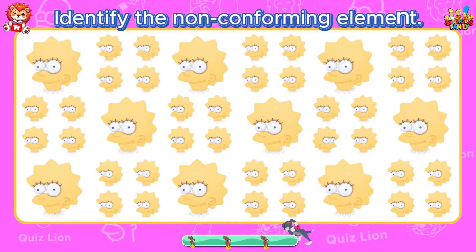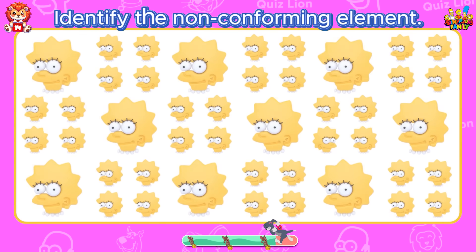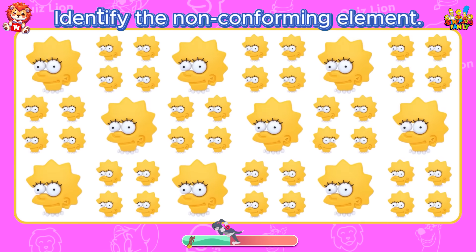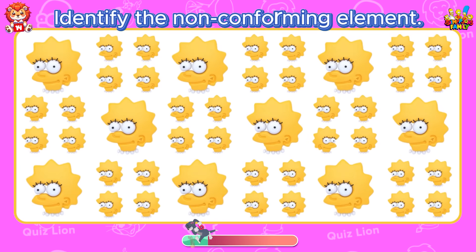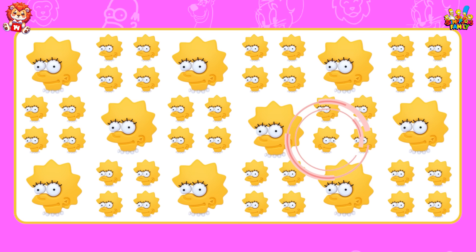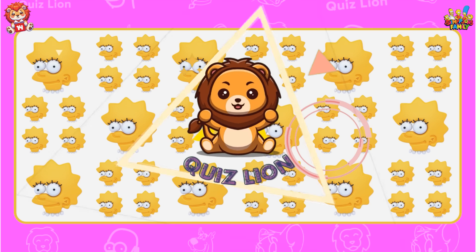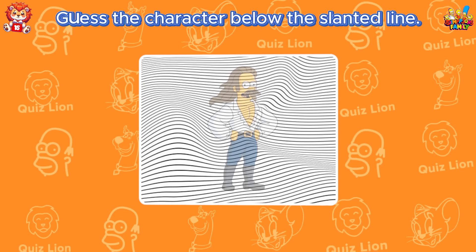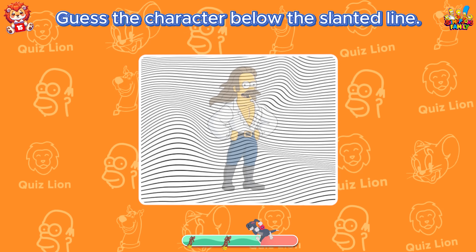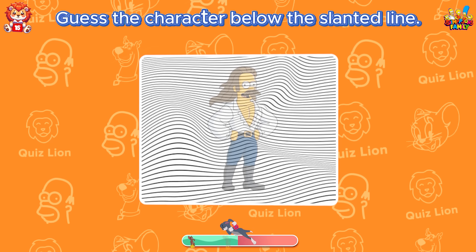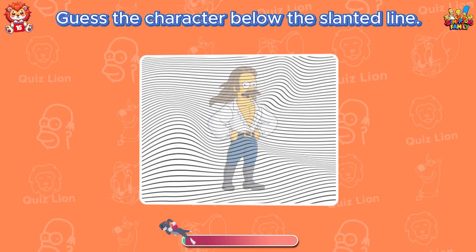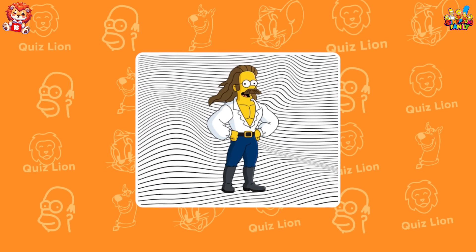Identify the non-conforming element. You really stand out in this project. Guess the character below the slanted line. It's Ned Flanders.